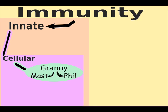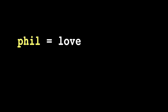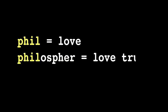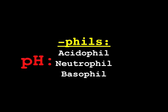The phils refer to acidophil, neutrophil, and basophil. Phil means love. The phils love certain pHs so much that when you stain them at the correct pH, they will happily change color to express their love.